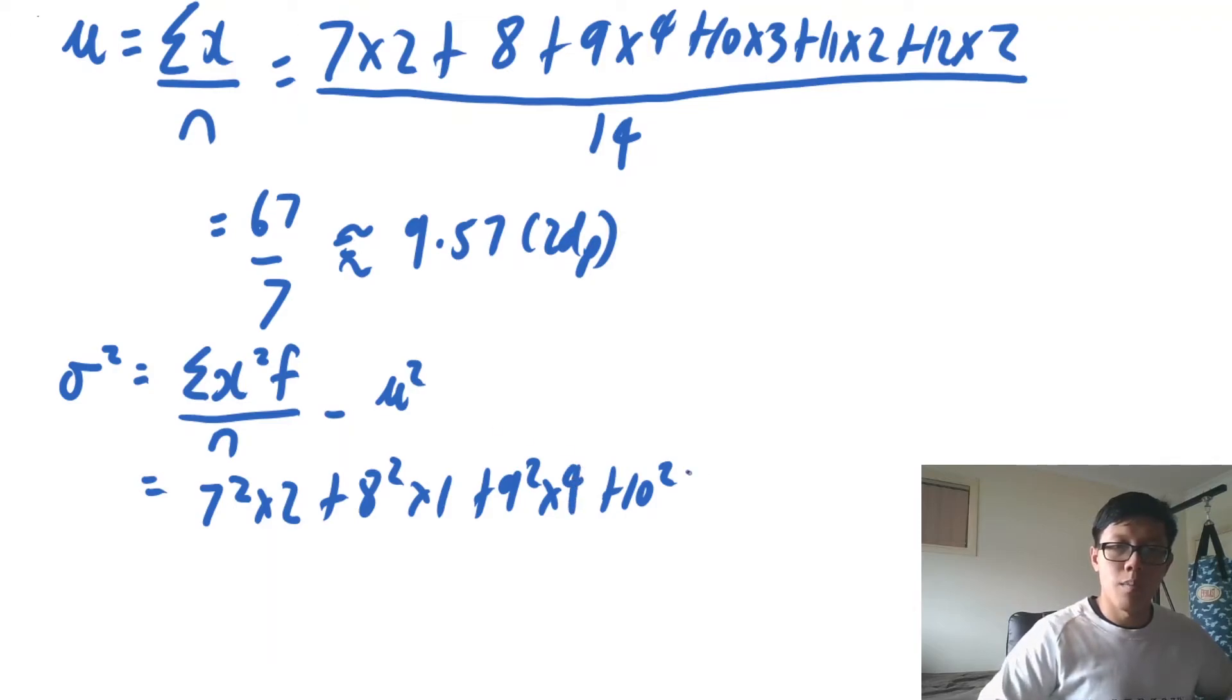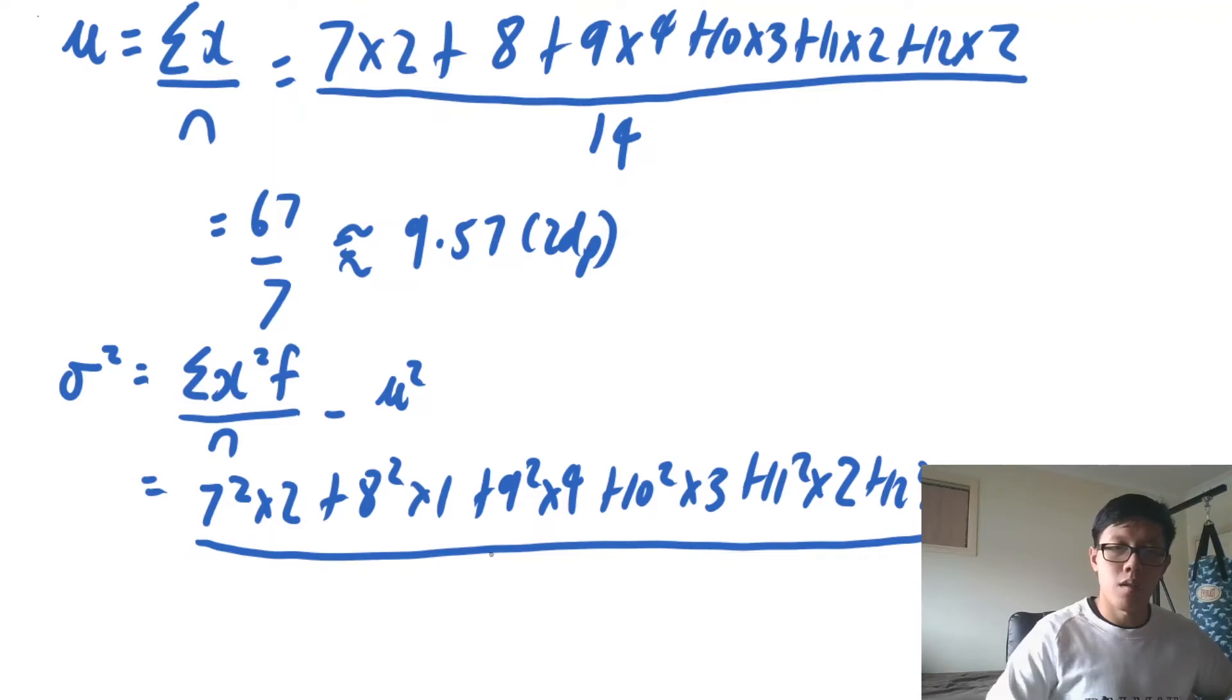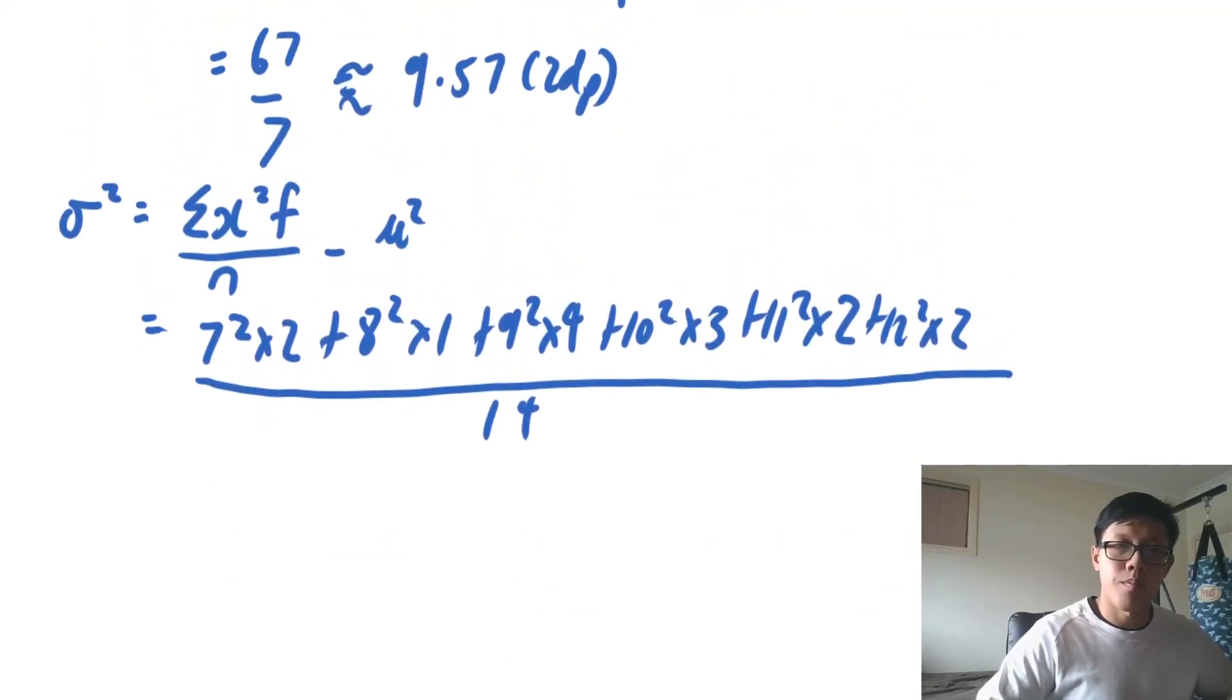10 squared multiplied by 3, 11 squared multiplied by 2 and 12 squared multiplied by 2, all over 14. And then we take away the mean squared minus 67 on 7 squared.